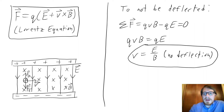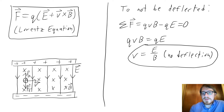We can combine both of these forces into a single equation called the Lorentz equation, which tells us how much force a charged particle will feel if it's traveling through a combination of electric and magnetic fields in the same region of space.